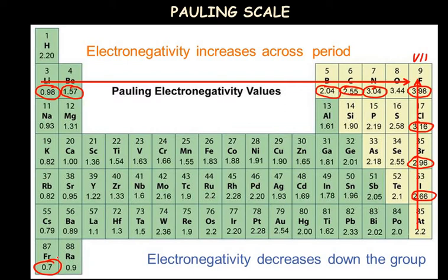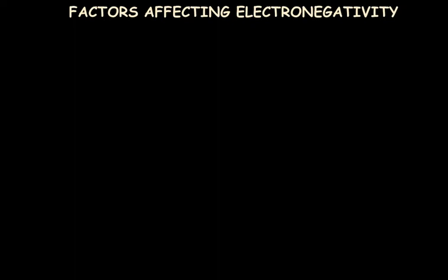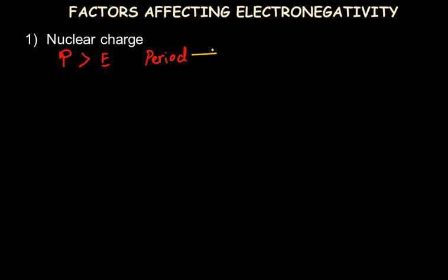Now let's understand the factors affecting electronegativity. The first factor is nuclear charge — the ability of an atom to attract electrons towards itself. If the number of protons in an atom is greater, the electronegativity will also be greater. This is why electronegativity increases across the period from left to right: the proton number increases from left to right, with fluorine having the highest proton number in period 2, giving it the greatest ability to attract electrons.